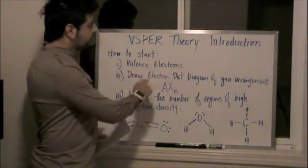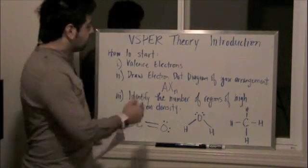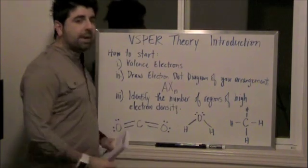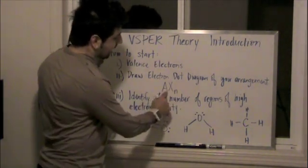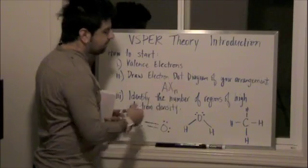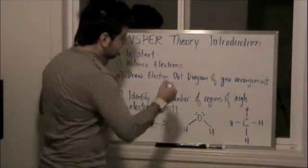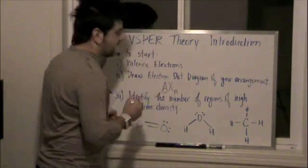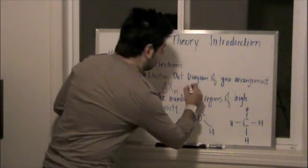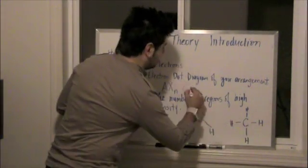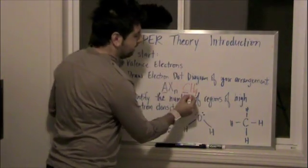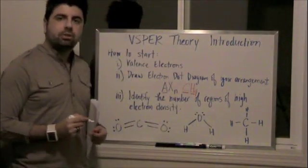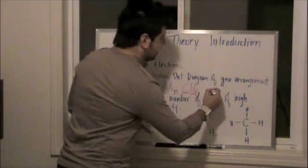But moving on, once you know the valence electrons, you need to be able to draw an electron dot diagram of your arrangement. And here I have the letters AXN. And what this means is A is your central atom. So an example, as we have down here, we have CH4. Here's our central atom and we have 4 hydrogens circling around it. We have another example,